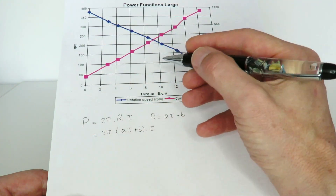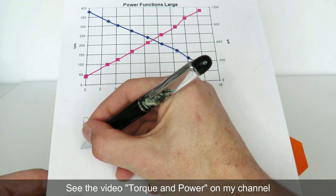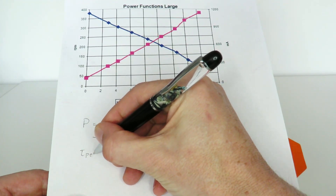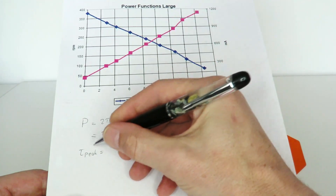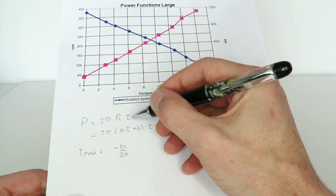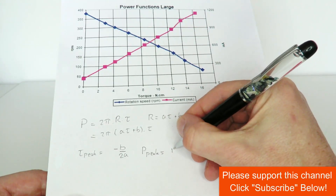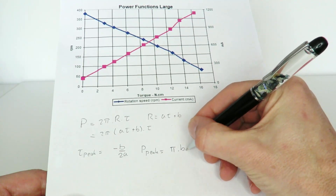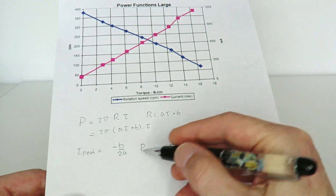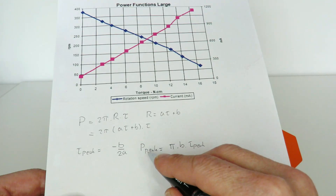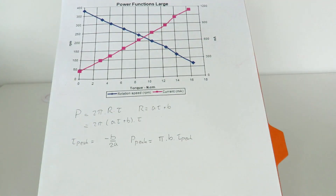We can substitute r back into the power equation to get 2π times (a·tor + b) times tor. This is a quadratic equation with a maximum point. By taking the derivative and setting it to zero we can solve for the torque that maximizes the output power. As shown in my previous video, the peak power occurs when tor = -b / 2a.